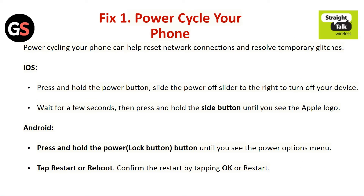Fix 1: Power Cycle Your Phone. Power cycling your phone can help reset your network connections and resolve temporary glitches. For iOS, press and hold the power button. Slide the power off slider to the right to turn off your device. Wait a few seconds, then press and hold the side button until you see the Apple logo.